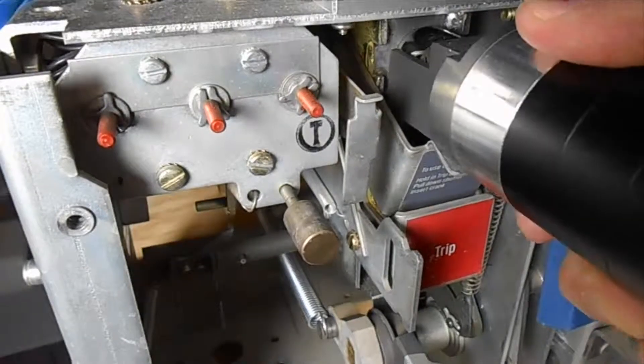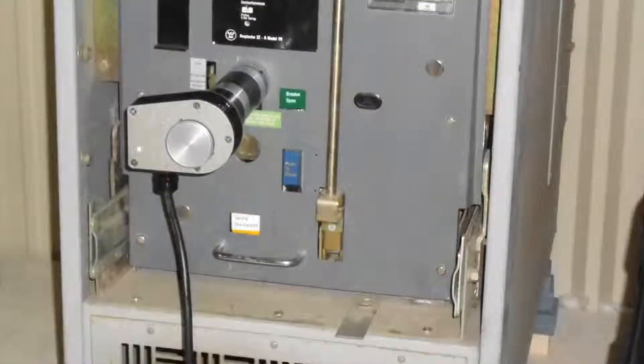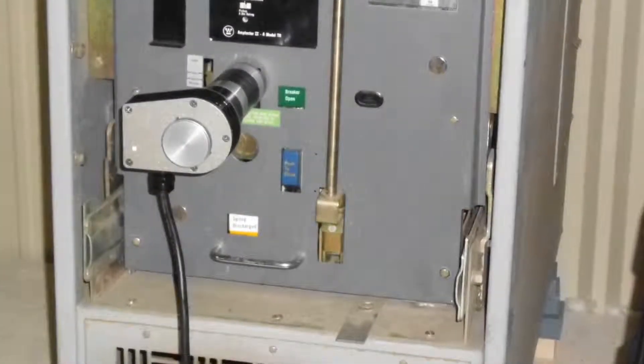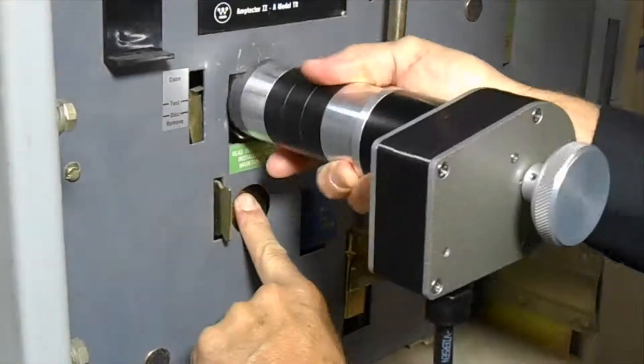Installing the racking head is very easy. The tang is used to depress the shutter window and the mechanism is simply slid forward to engage the racking nut.